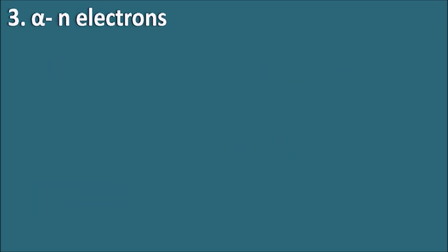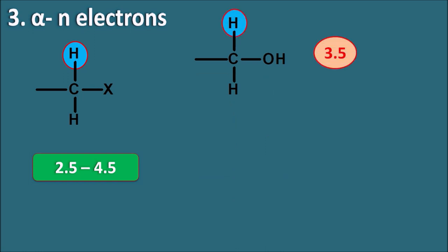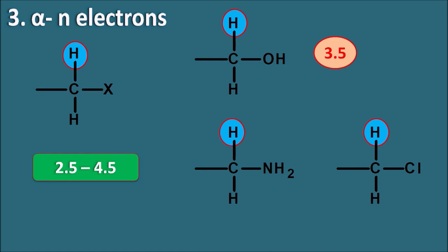Third, protons alpha to lone pair electrons (N electrons). These are protons attached to a carbon bearing a heteroatom such as oxygen, nitrogen, or a halogen. All these are electron-withdrawing groups that increase the chemical shift through deshielding. For example, in an alcohol the protons adjacent to the OH group fall at around 3.5 ppm. Protons in amines and alkyl halides similarly fall in the range of 2.5 to 4.5 ppm — remembered simply as alpha-hetero protons.